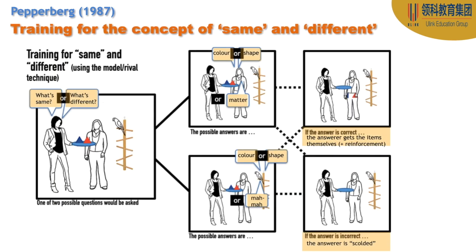The later training for same and different is very similar in structure: getting something correct or being reprimanded in some way. Now the questions are not 'What is it? What matter? What shape? What color?' — now it's 'What's the same? What's different?' You could say three things: color, shape, or matter. Or in Alex's case, color, shape, or 'mama' — apparently he had a hard time forming the sounds to say 'matter,' so they settled on 'mama' as a plausible pronunciation.